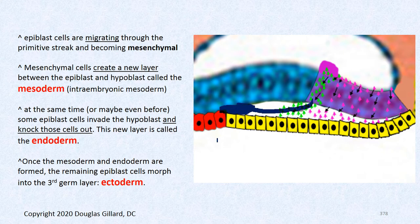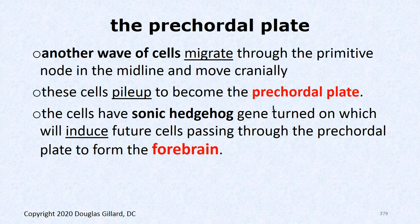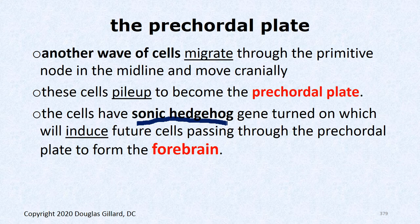These are anterior visceral endoderm cells — they turn off nodal at the cranial end, so the streak can't form there. We get a pre-chordal plate, which is another important control center. The cells in the pre-chordal plate have the sonic hedgehog gene turned on. When cells pass through the pre-chordal plate, sonic hedgehog induces mesenchymal cells passing through it to go up and form an important part of the brain — the forebrain.